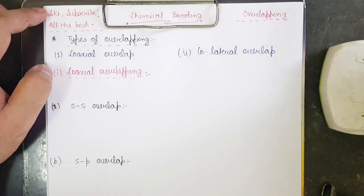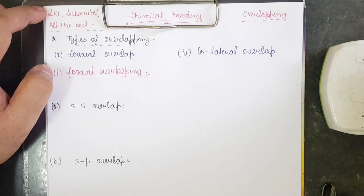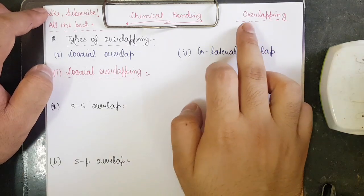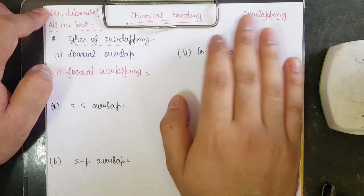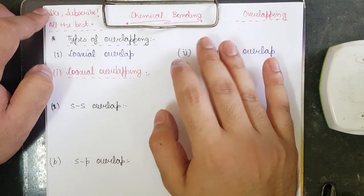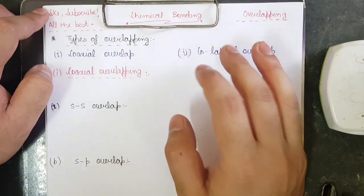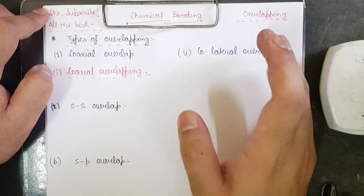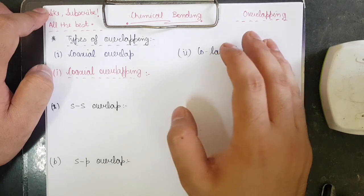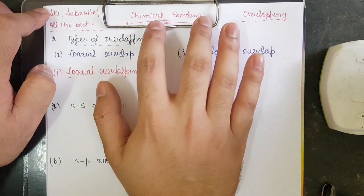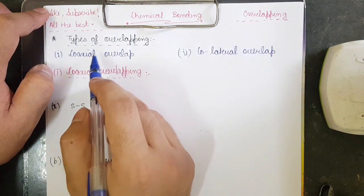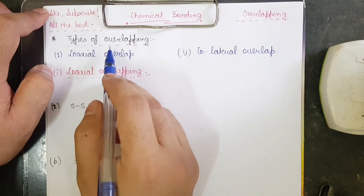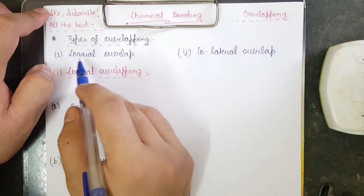Hello everyone, welcome to my new video. This video is going to be on overlapping. Overlapping is a fairly easy topic but a very important topic which is derived from VBT. This is Chemical Bonding Part 7. Let's begin. I will be taking two types of overlapping: first is coaxial overlapping, second is collateral overlapping.